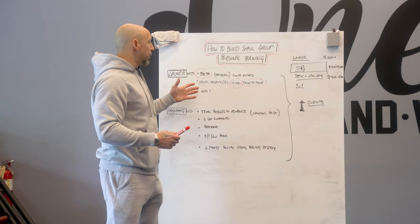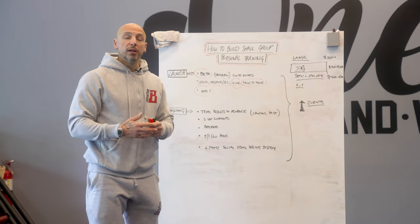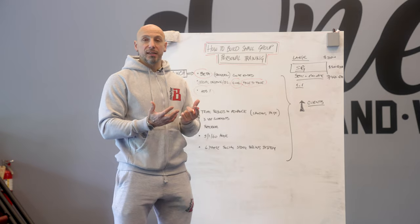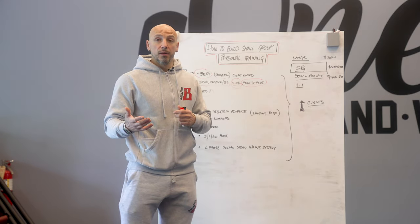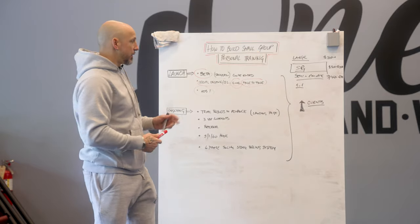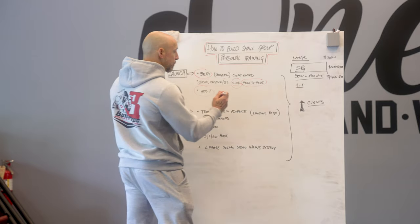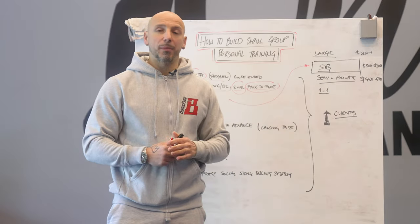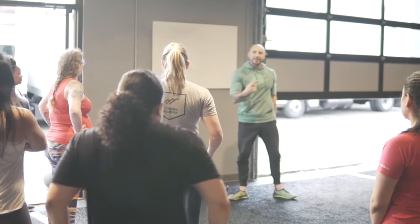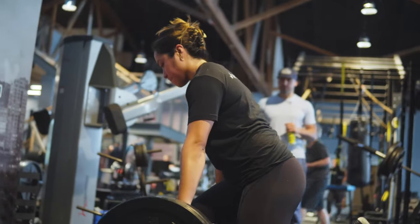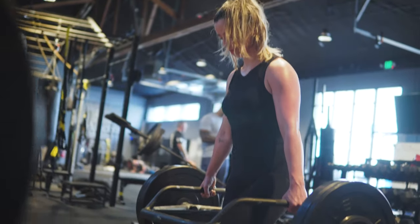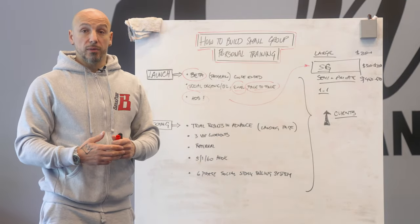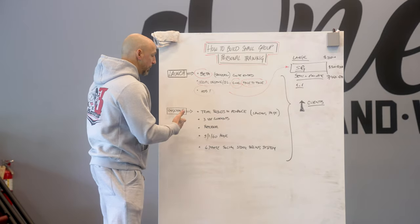In the beta program, if you use the done-for-you programming it'll make a big difference. Deliver value in those 30 days and then convert people to an ongoing small group program. For example, if 20 people try it out and 12 to 14 love it, sign them up at that price point — you're doing three to four grand a month right there from that one launch. After launching, you want a model for ongoing leads.